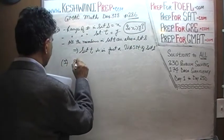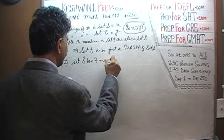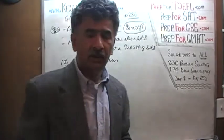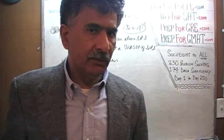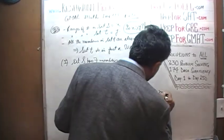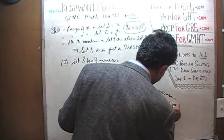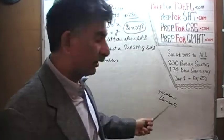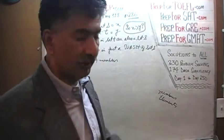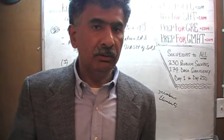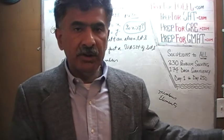The first statement tells us that set S has seven members, and that is all they tell us. We really don't have to do anything at all here. Simply knowing the number of members in a set — whether they are called members or elements — has absolutely no bearing whatsoever on the range of the set. The range of a set has absolutely nothing to do with how many or how few elements there are.